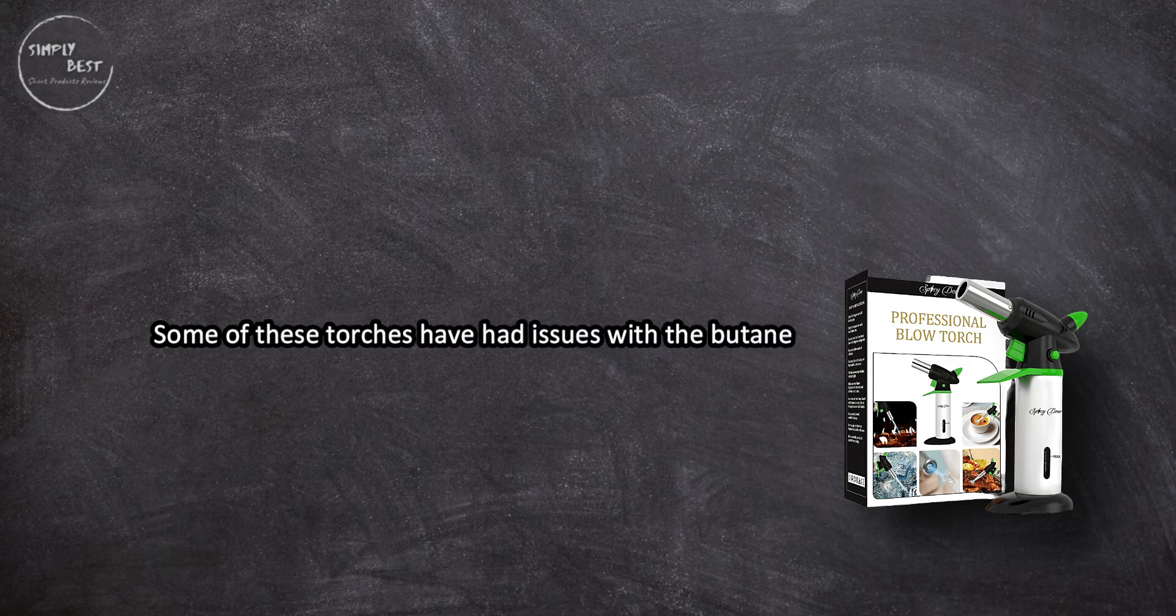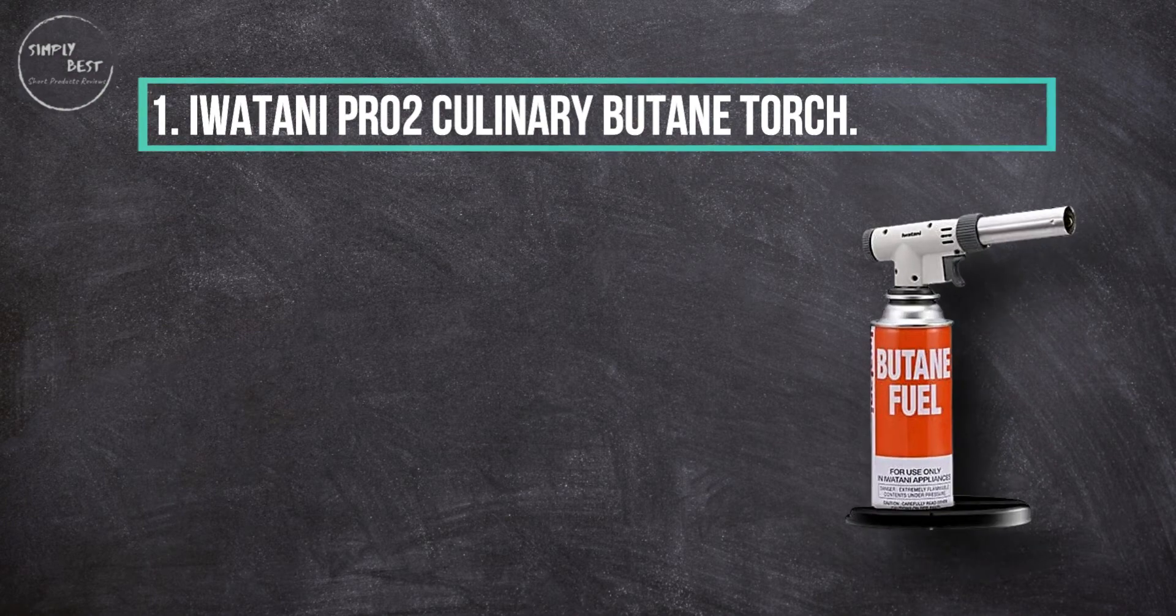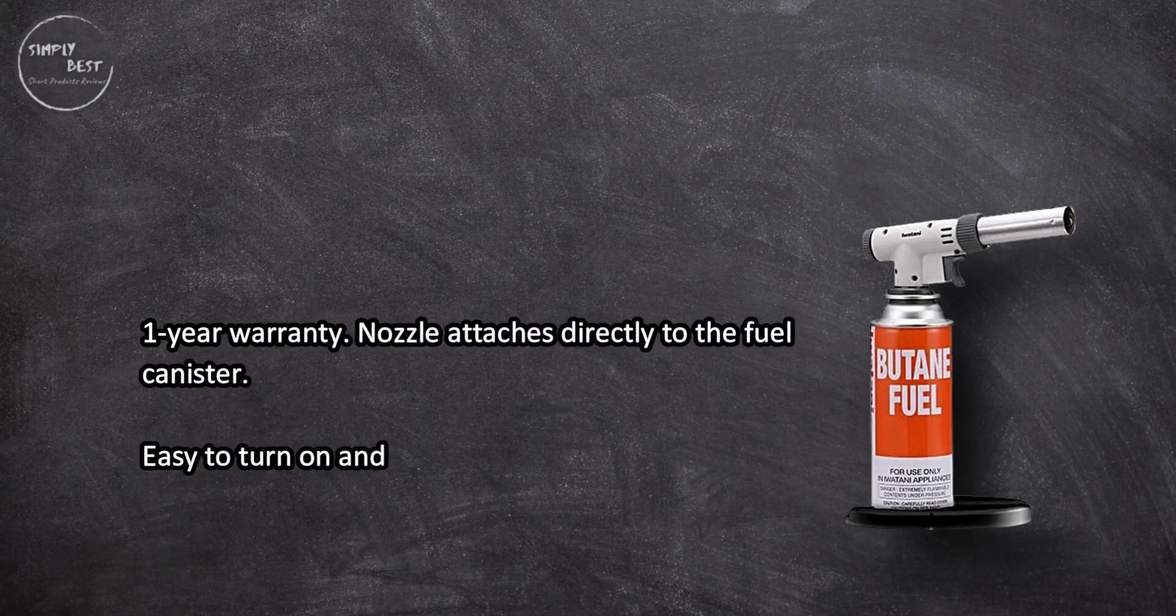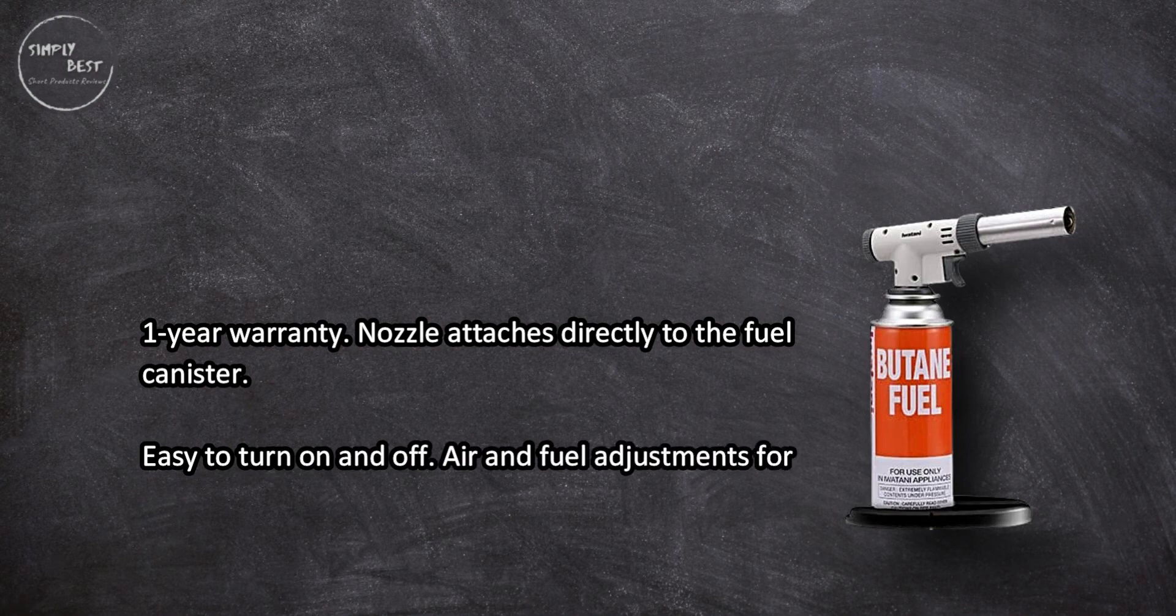At number 1: Yur Toni PR02 Culinary Butane Torch. One year warranty, nozzle attaches directly to the fuel canister, easy to turn on and off. Air and fuel adjustments for the exact level of flame that you need.